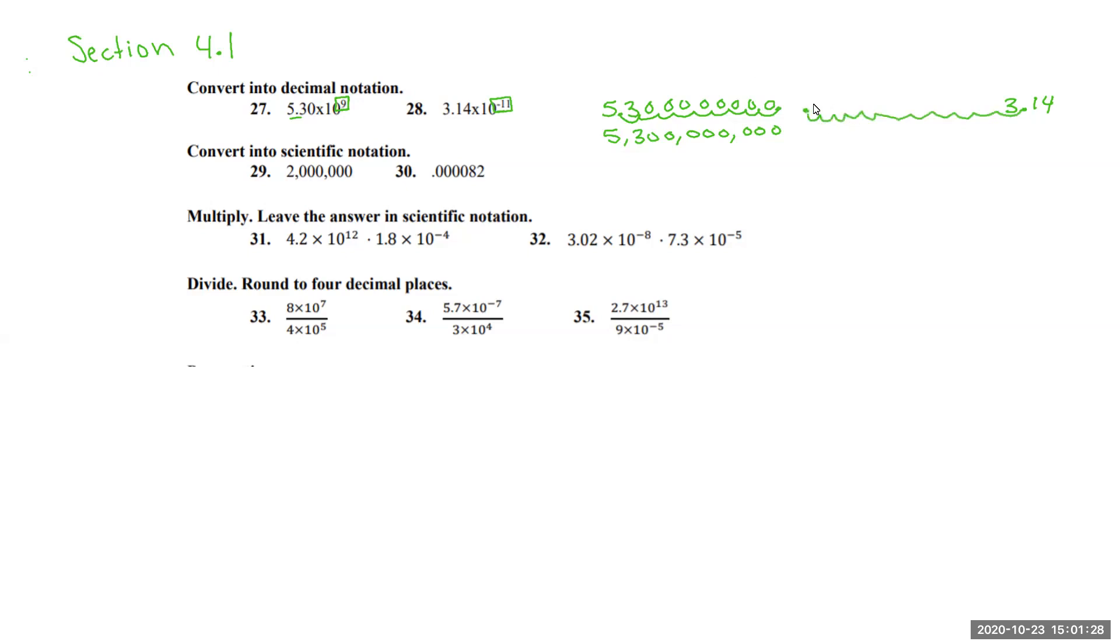The decimal is now over here. We have 1, 2, 3, 4, 5, 6, 7, 8, 9, 10 zeros. And then that is your final answer there. Just don't get lost in all the zeros.